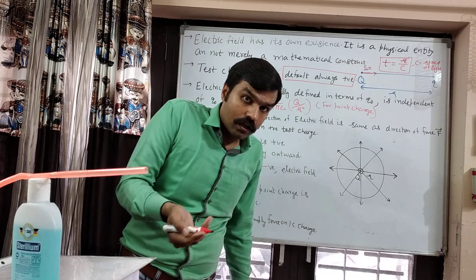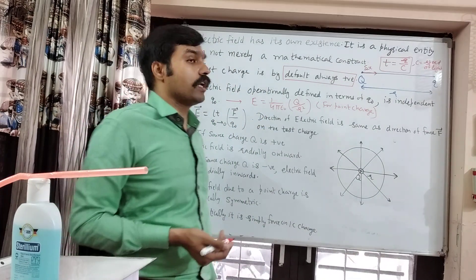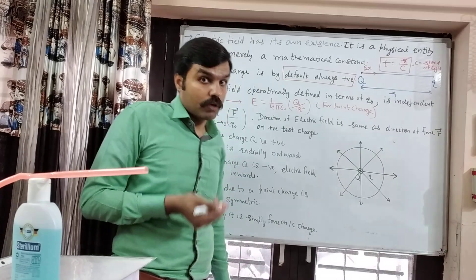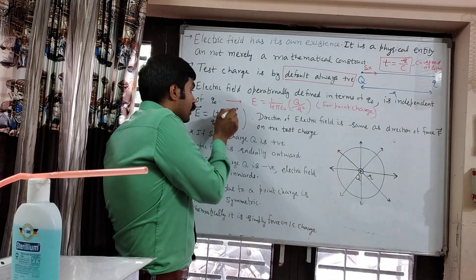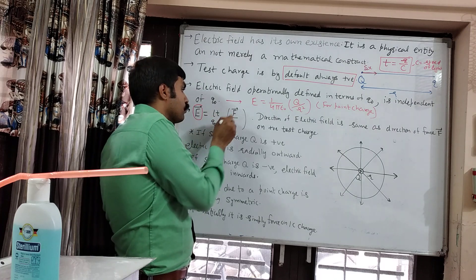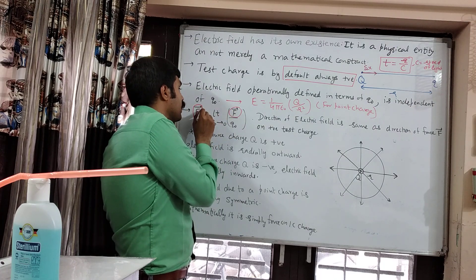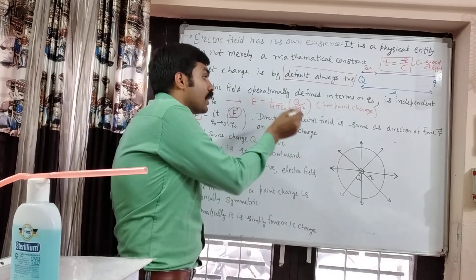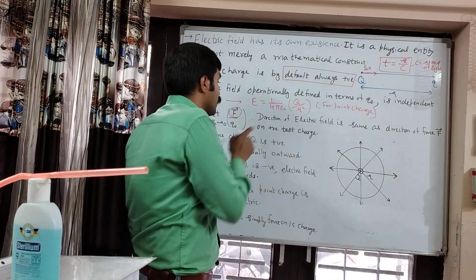We had also told in the last video that electric field is a vector quantity. What about the direction? The direction of electric field is always the same as the direction of force on a positive test charge, as seen from the expression E vector = limit as q₀→0 of F vector divided by q₀.